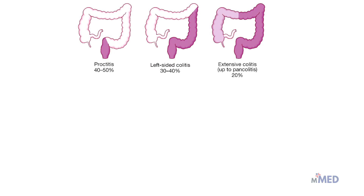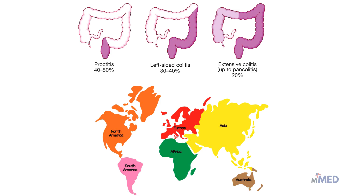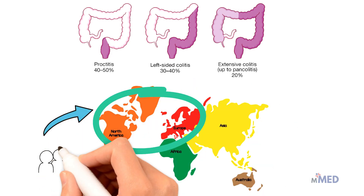Regarding common patterns of disease distribution in UC: approximately 40–50% have proctitis, the most common location in the sigmoid colon; around 30–40% have left-sided colitis involving the whole descending colon; and in 20% of cases the whole colon is involved, which is extensive colitis. Ulcerative colitis is more prevalent in North America and Europe, with age of onset typically between 15 and 40 years.